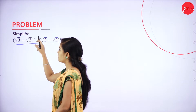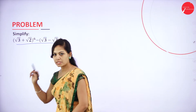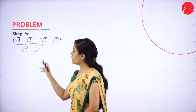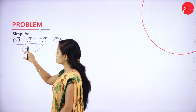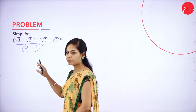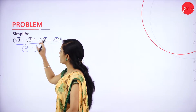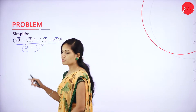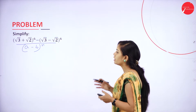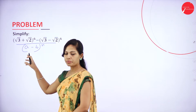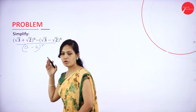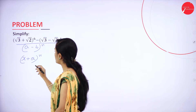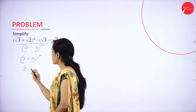We have the expression: root 3 plus root 2 power 6, minus root 3 minus root 2 power 6. Here we have two terms — a minus b whole power n — because this term represents a and this term represents b. The two terms are the same but one has a negative symbol and the other a positive symbol. This is a binomial expression. If we have a minus b whole power n or a plus b whole power n, we can easily apply the binomial coefficient formula.